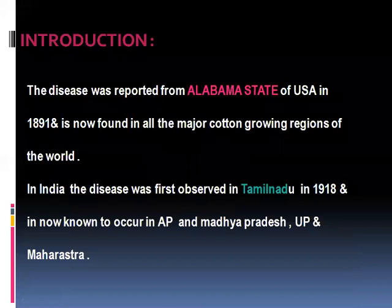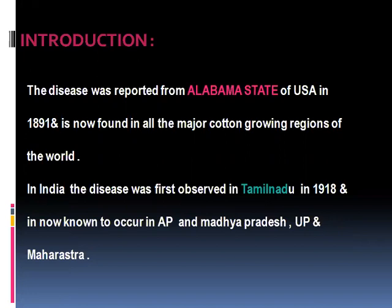Angular Leaf Spot of cotton — this is an introduction. The disease was reported from Alabama, USA in the year 1891, and is now found in all the major cotton growing regions of the world. In India, the disease was first observed in Tamil Nadu in the year 1918.